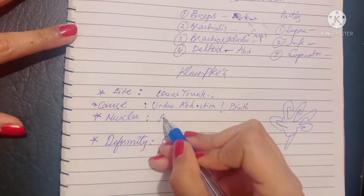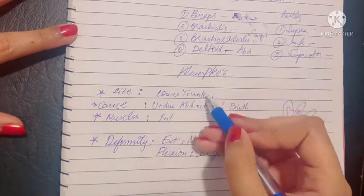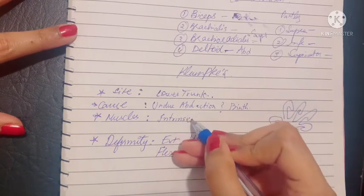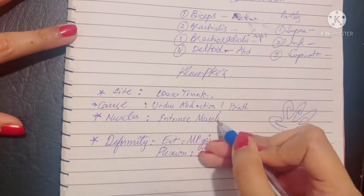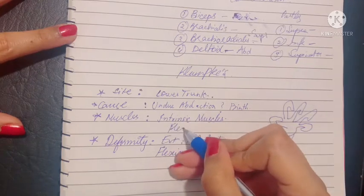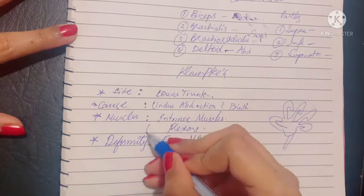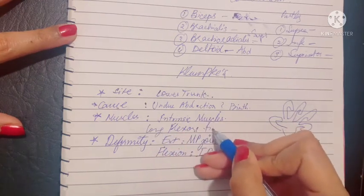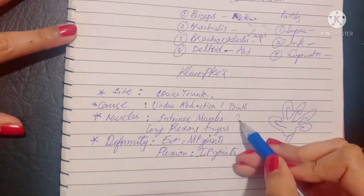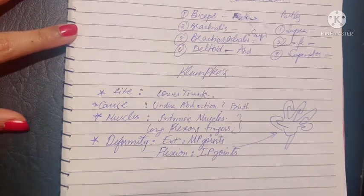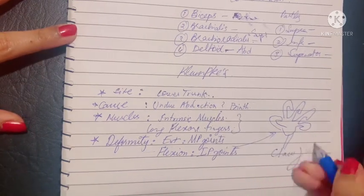The muscles involved in Klumpke's: since it's the lower trunk, the ulnar nerve is being formed. When the ulnar nerve is damaged, the intrinsic muscles of the hands and the long flexors of the fingers undergo paralysis. This results in the deformity called claw hand.